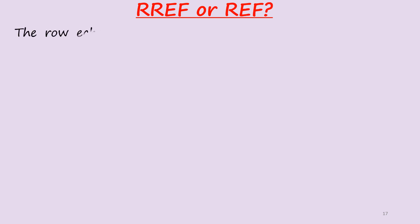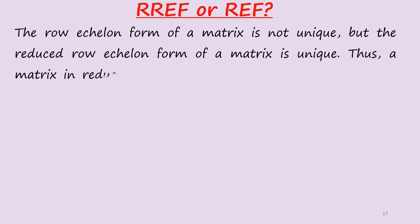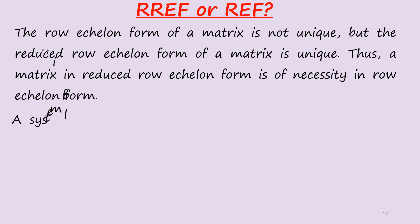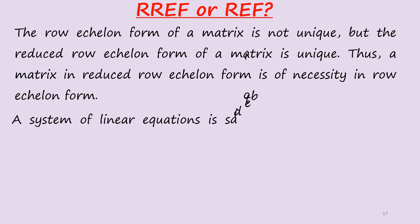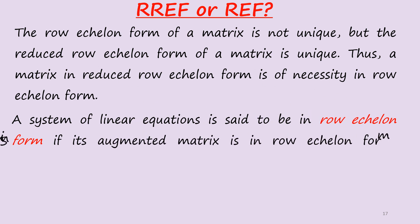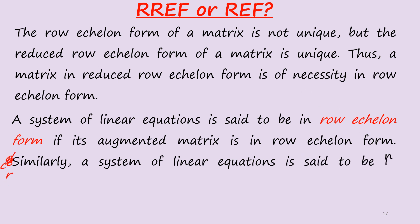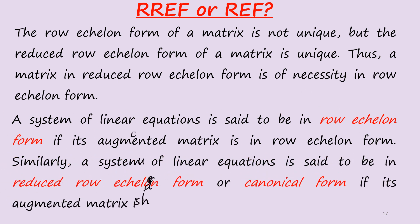The row echelon form of a matrix is not unique, but the reduced row echelon form of a matrix is unique. A matrix in reduced row echelon form is necessarily in row echelon form. A system of linear equations is said to be in row echelon form if its augmented matrix is in row echelon form. Similarly, a system is in reduced row echelon form, or canonical form, if its augmented matrix is in reduced row echelon form.